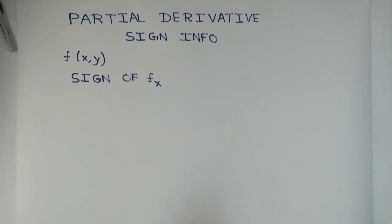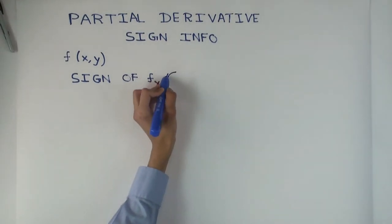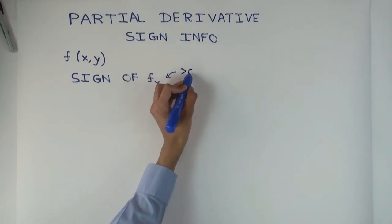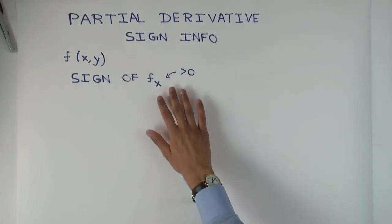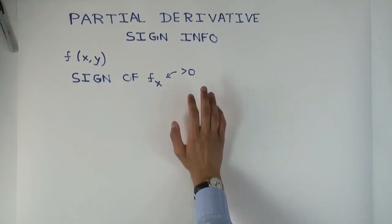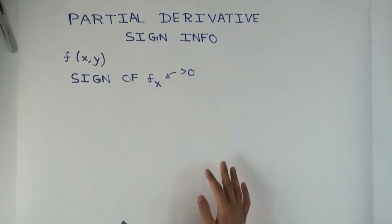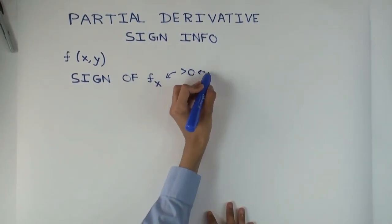So if the partial derivative f sub x is greater than zero, what does that mean? If we keep the other variable constant and increase x, then the function value increases. So it's increasing with respect to x, holding y constant.